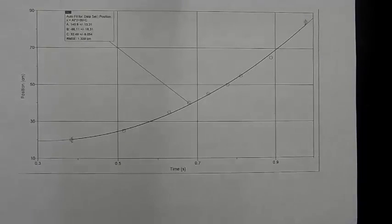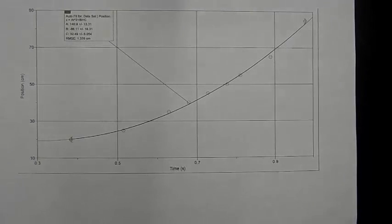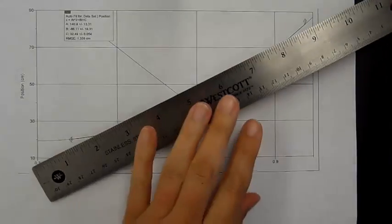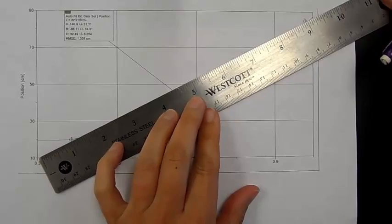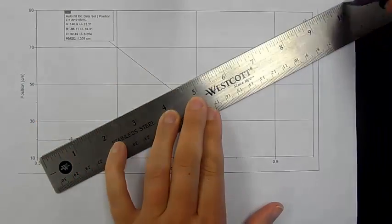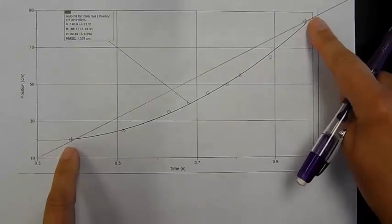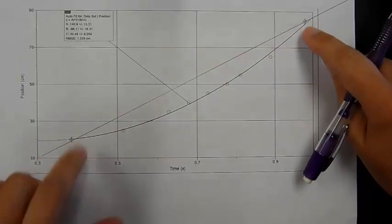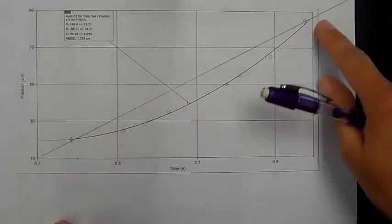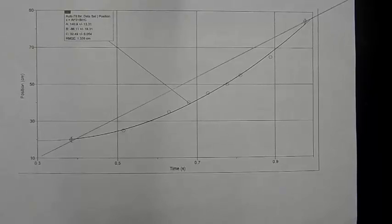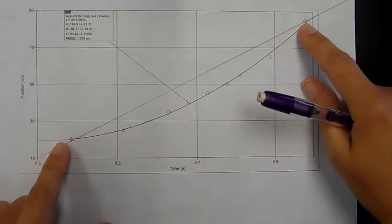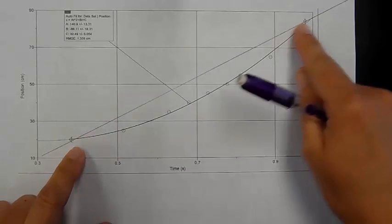In our constant velocity graph, we could pick any two points on the line, and the slope of that line told us the average velocity. On this graph, we can do the same thing. If we take two points and draw a line through them, that line represents the average velocity between those two points. When we draw a line connecting two points on a curve, we call this a secant line. The slope of that secant line represents the average velocity between those two points.